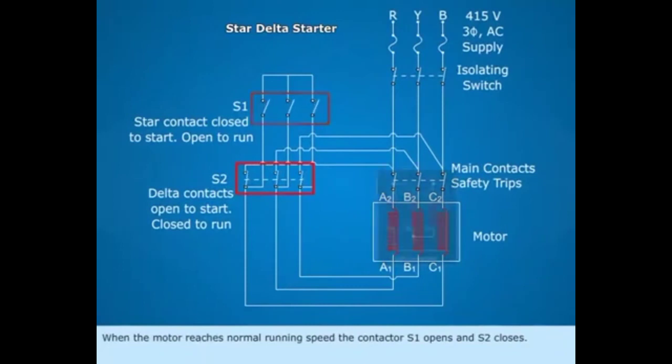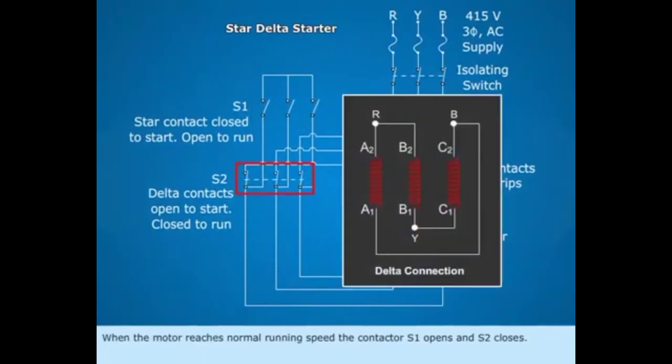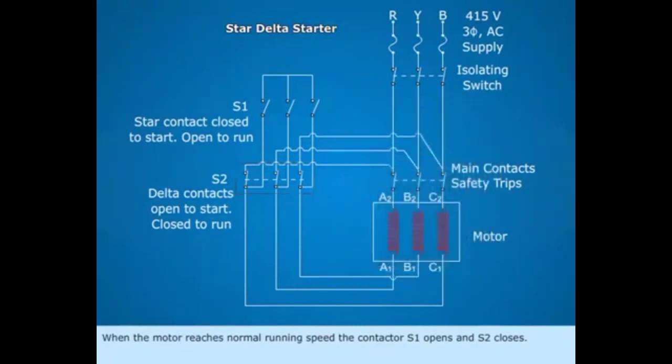When the motor reaches normal running speed, the contactor S1 opens and S2 closes. Now stator winding is connected in delta. Full line voltage will be applied across the windings.